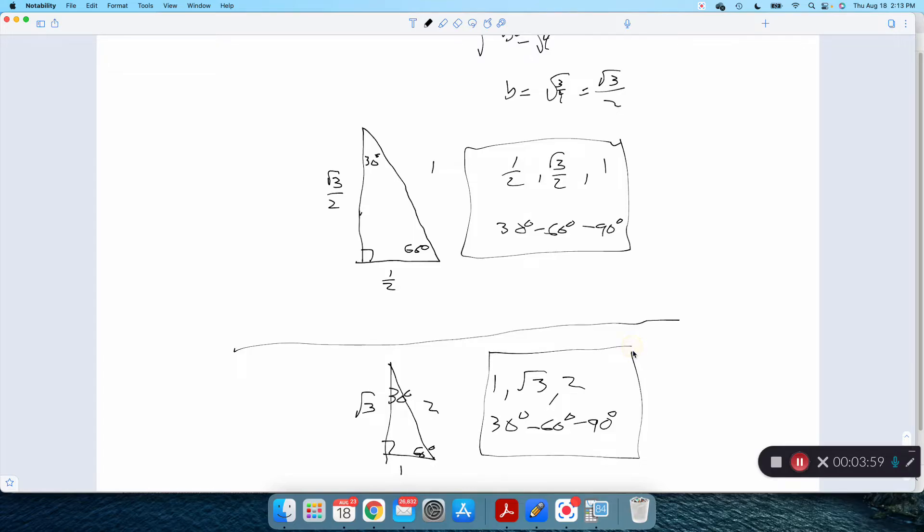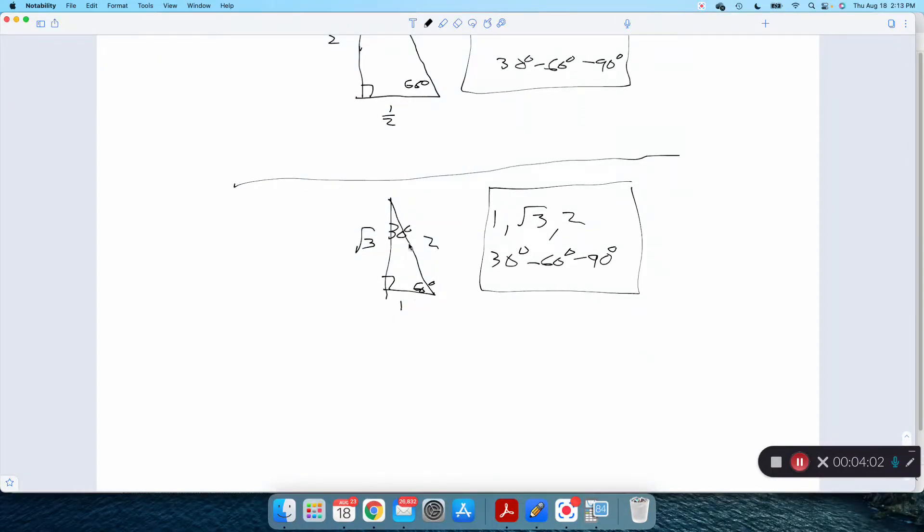So what that means is, in a 30, 60, 90 triangle, if you know one of the sides, you can find the other ones. So, for example, let's even draw it different. I'll lay it on its side. Here's my 30 degree angle. If I know this side is 7, across from the 30, then I know the hypotenuse is double that. It has to be 14. And I know the side across from the 60, the longer leg, has to be that one times root 3.